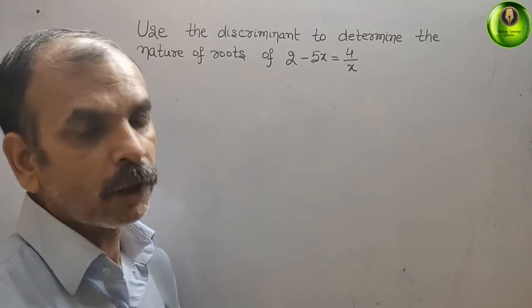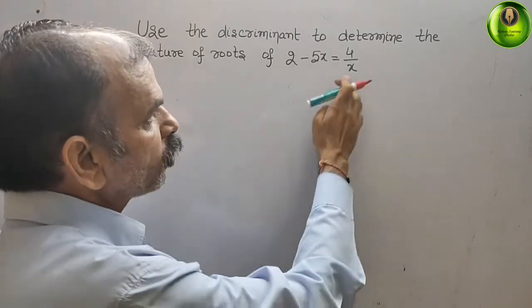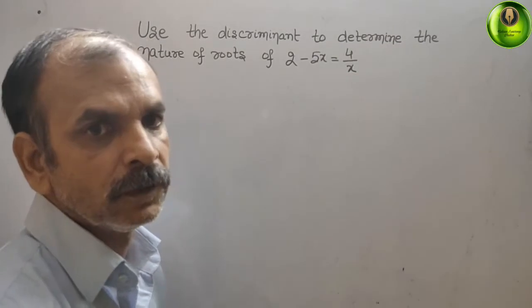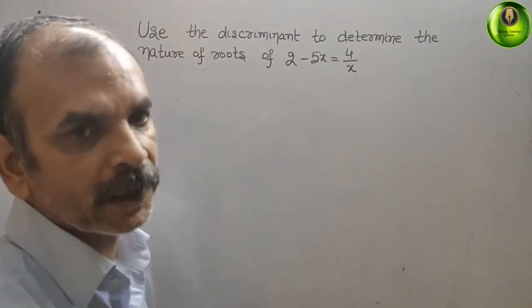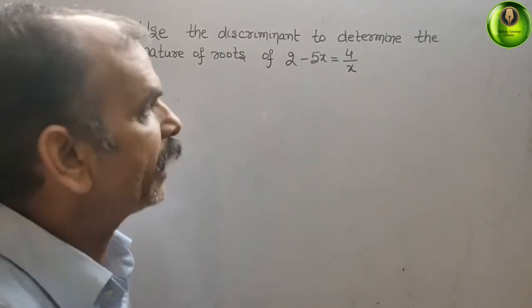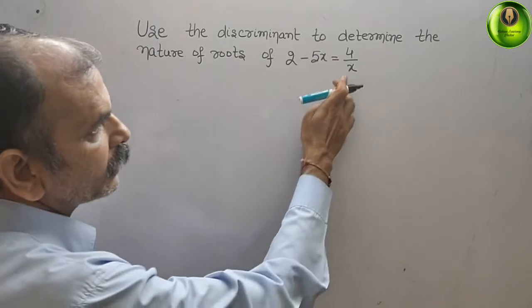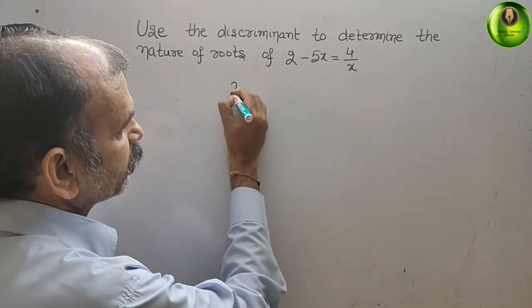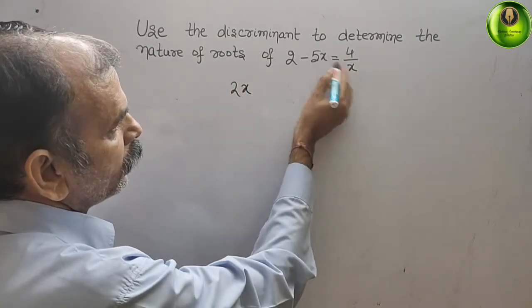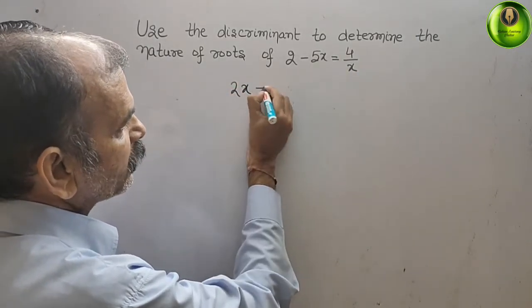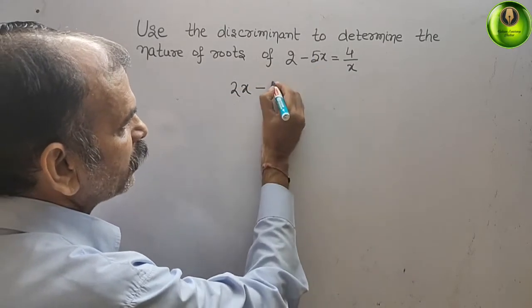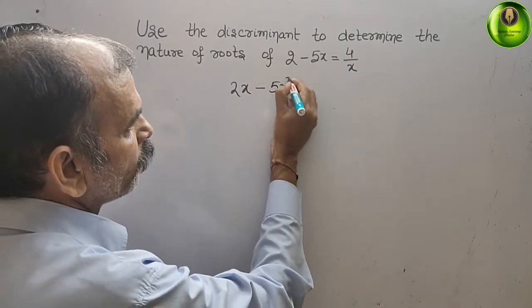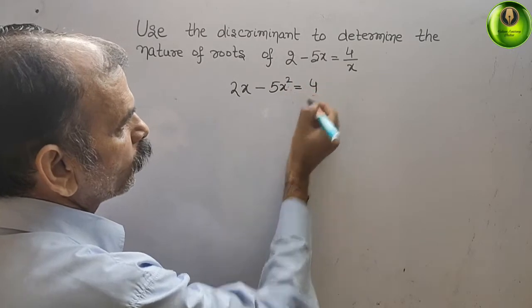First, we will solve this by cross multiplication. What we get is: x into 2 is 2x, minus 5x into x is 5x squared, and that is equal to 4.